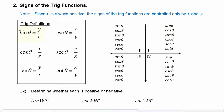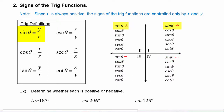Sine theta is defined to be y over r. Since r is always positive, wherever y is positive, sine theta will be positive, and wherever y is negative, sine theta will be negative. We know y coordinates are positive in quadrants one and two, and negative in quadrants three and four. So sine theta will be positive in quadrants one and two, and negative in quadrants three and four.